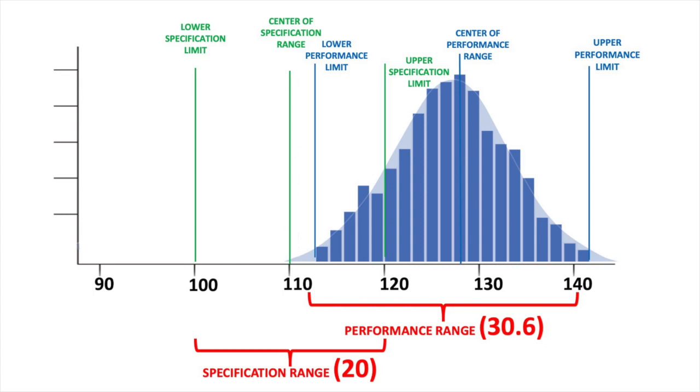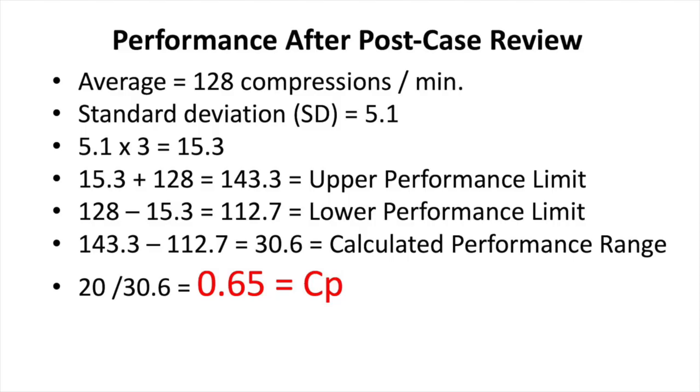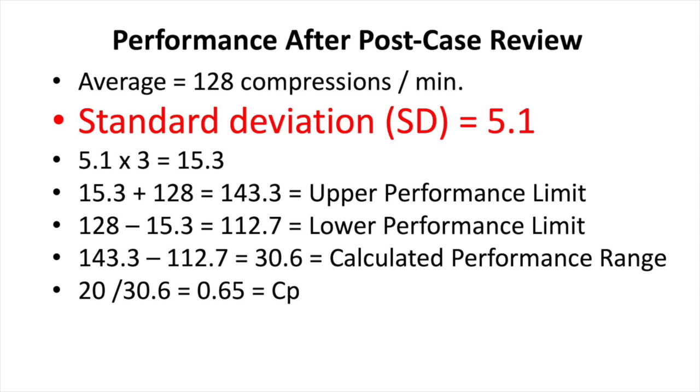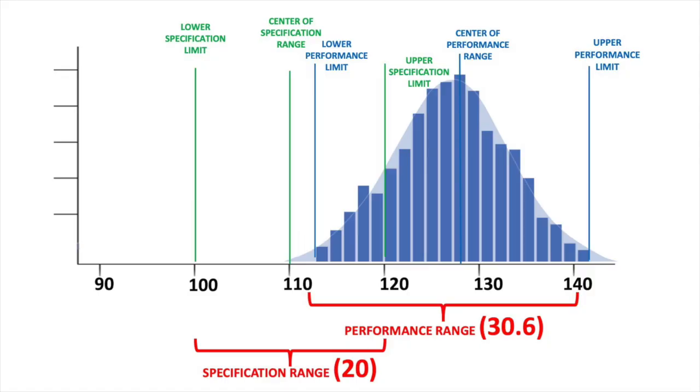The team chose to start with post-case reviews since that did not require purchasing new gear. They figured out a way to quickly analyze the CPR data from the defibrillators with case review software, then trained crews and field supervisors on how to debrief with the CPR performance reports. After making this change, they measured chest compression process performance again. Their CP went up from 0.37 to 0.65 — a definite improvement, but not as much as they'd like. They also noticed the average shifted — it's now faster at 128 compressions per minute — though the standard deviation improved to 5.1.